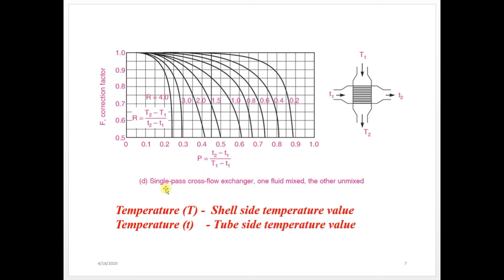In the fourth graph, it refers to single pass cross flow heat exchanger with one fluid mixed and other fluid unmixed. It is a cross flow type heat exchanger where one fluid is mixed and the other fluid is unmixed. By referring P and R values, you can find out the correction factor F value. Please remember: capital T refers to shell side temperature and small t refers to tube side temperature, because these two temperatures are required to find out P and R value, and based on P and R value you will get correction factor F.